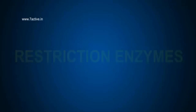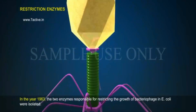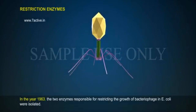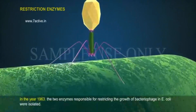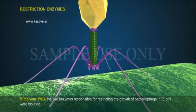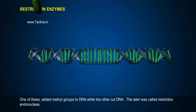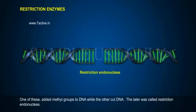Restriction Enzymes. In the year 1963, the two enzymes responsible for restricting the growth of bacteriophage in E. coli were isolated. One of these added methyl groups to DNA while the other cut DNA. The latter was called Restriction Endonuclease.